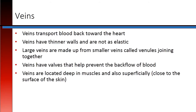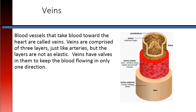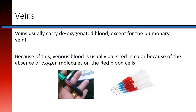Veins transport blood back toward the heart. They have thinner walls and they are not as elastic as arteries. Large veins are made up of smaller veins called venules joining together. Veins have valves that help prevent the backflow of blood, and they are located both deep in muscle tissue but also superficially, or close to the surface of the skin. Blood vessels that take blood toward the heart are called veins. Veins are comprised of three layers, just like arteries, but the layers are not as elastic, and veins have valves in them to keep the blood flowing in only one direction. Veins usually carry de-oxygenated blood, except for the pulmonary vein. Because of this, venous blood is usually dark red in color because of the absence of oxygen molecules on the red blood cells.